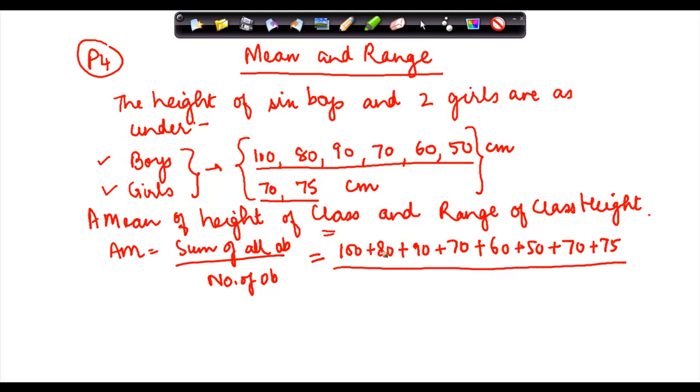And the number of observations, one, two, three, four, five, six, seven, eight. So the arithmetic mean will basically come as sum of all these numbers.